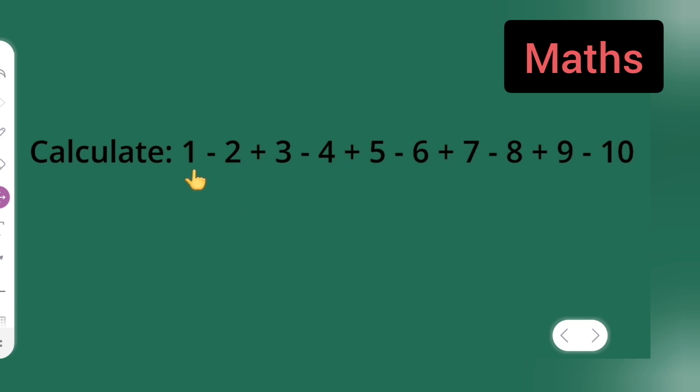So 1 minus 2 will be giving you minus 1. Next plus 3. 3 minus 4 will be again minus 1 right. So again put minus 1 over here.